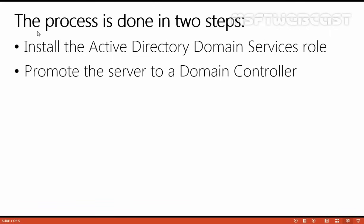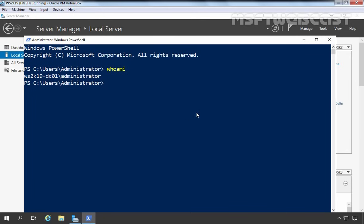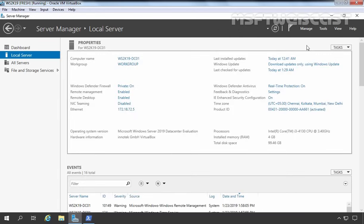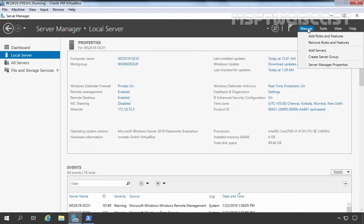The process is done in two steps. First, we need to install the Active Directory Domain Service role. Then we need to promote the server as a Domain Controller. So let's go back to Server Manager, and I am going to click on Manage. Here we have options to add roles and features.